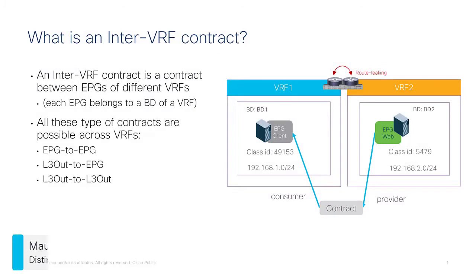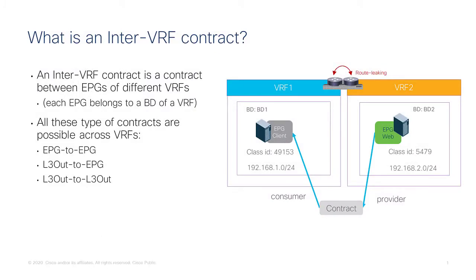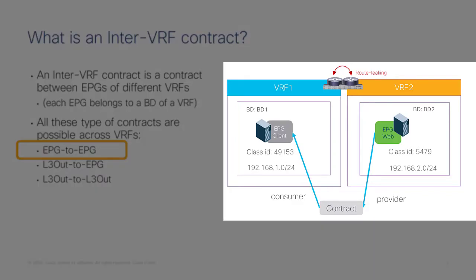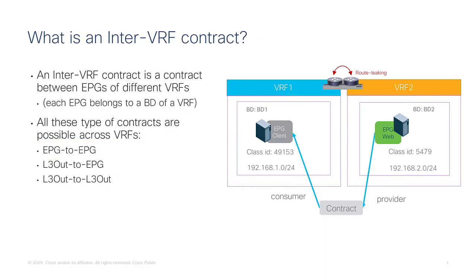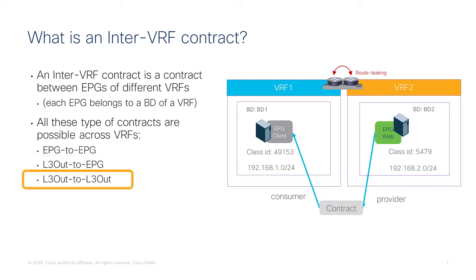Understanding ACI inter-VRF contracts. An inter-VRF contract is a contract between EPGs that are on different VRFs. There are multiple options that fall into the same category: an EPG-to-EPG contract, a layer 3-out to EPG contract with the layer 3-out in a different VRF than the EPG, or a layer 3-out to layer 3-out contract with two layer 3-outs in different VRFs. All of these are covered by this presentation.